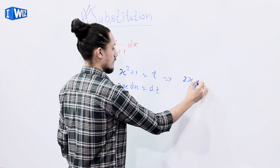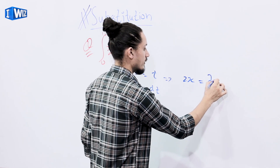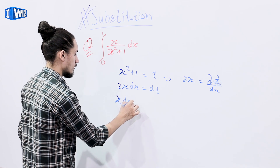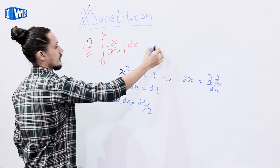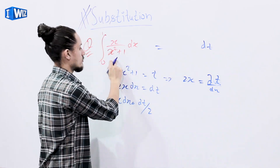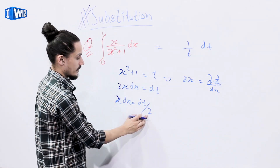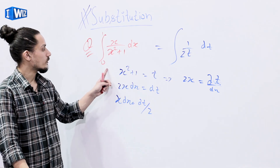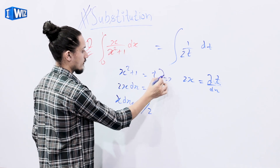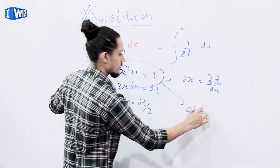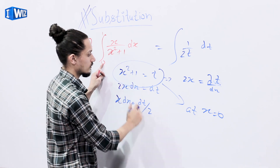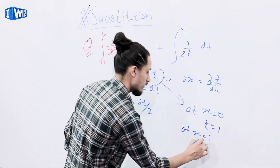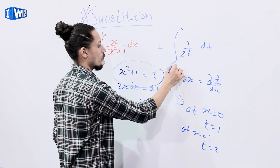For the substitution example, we put x squared plus 1 equal to t. Differentiating both sides with respect to x, we get 2x dx equals dt, so x dx becomes dt/2. The function transforms: x dx becomes dt/2 and 1/(x²+1) becomes 1/t, giving us the integral of 1/(2t) dt. Since the variable changed from x to t, the limits also change. At lower limit x equals 0: t equals 0 plus 1 equals 1. At upper limit x equals 1: t equals 1 plus 1 equals 2. So the limits change from 0 to 1, to 1 to 2.